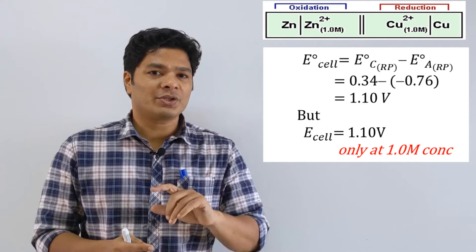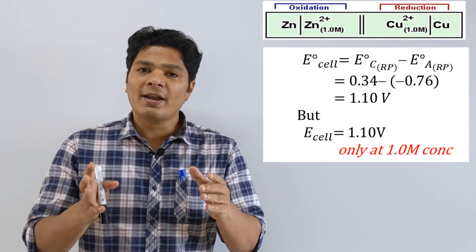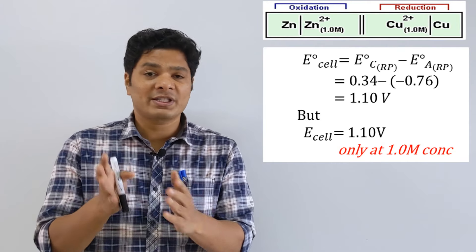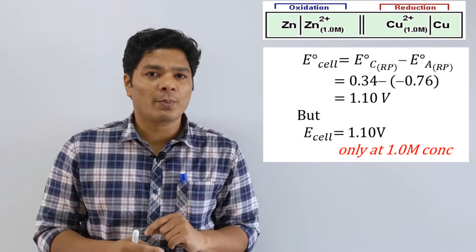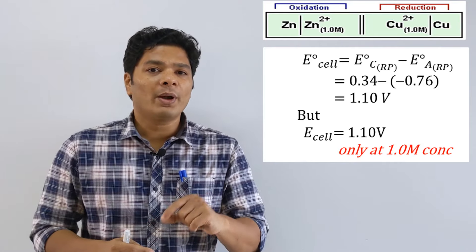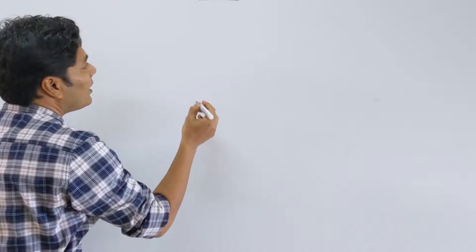The standard reduction potential has not changed for the cell. Standard reduction potential is at standard condition — 1 molar — that is still 1.1 volt. But what is the actual potential of the given cell? This is where you need to use an equation called the Nernst equation.